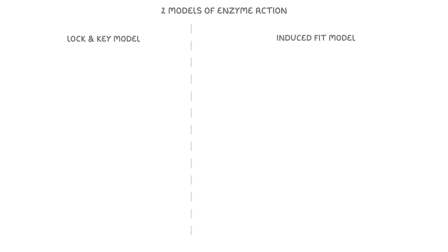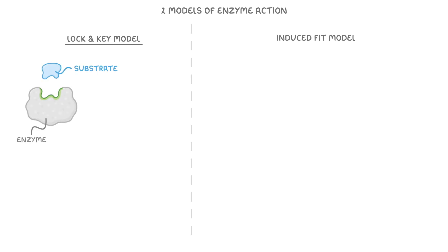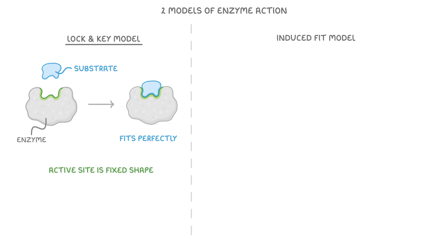Let's go over the two models of enzyme action that scientists have come up with to explain how enzymes work: the lock and key model, and the induced fit model. First, in the lock and key model, the substrate fits perfectly into the enzyme's active site, just like a key fits perfectly into a lock. Overall, this model gives the impression that the enzyme's active site is a fixed shape that only fits specific substrates.